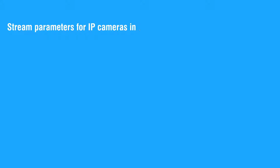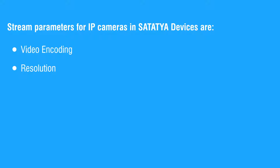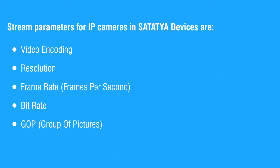Stream parameters for IP cameras in Satathya Devices are: Video Encoding, Resolution, Frame Rate or Frames Per Second, Bitrate, and GOP or Group of Pictures. Let us see all of them.